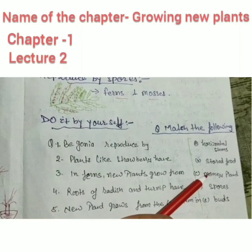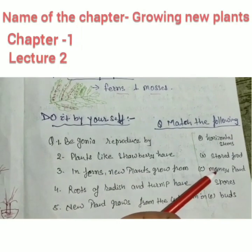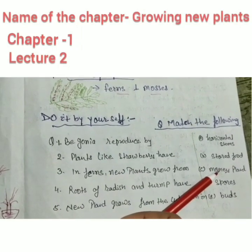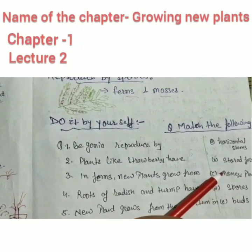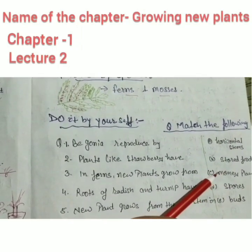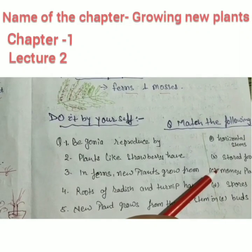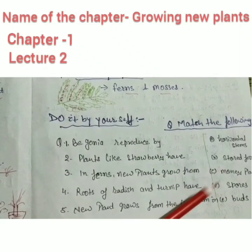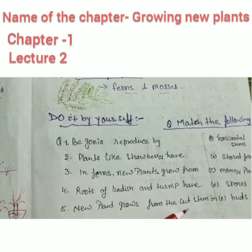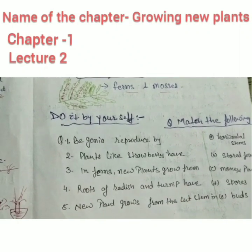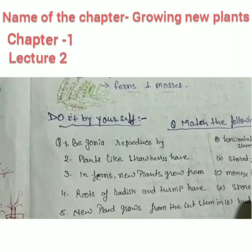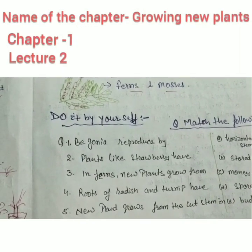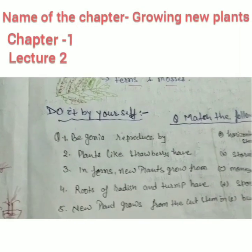What do we do with stem cutting? Plants like money plant and rose are grown with the help of cutting the stems. You have to answer all these questions and also make short notes in your copy.